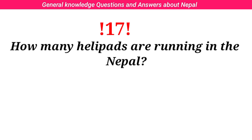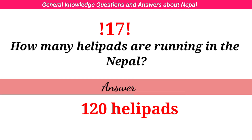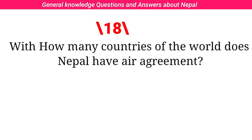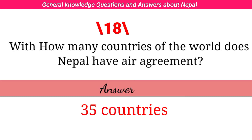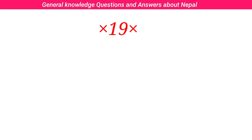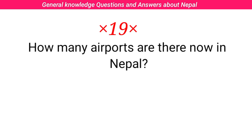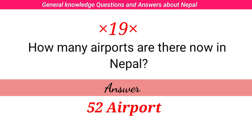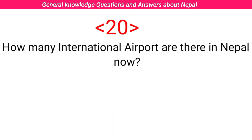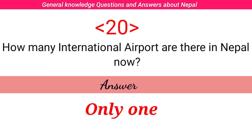How many helipads are running in Nepal? Answer: 120 helipads. With how many countries of the world does Nepal have an air agreement? Answer: 25 countries. How many airports are there now in Nepal? Answer: 52 airports. How many international airports are there in Nepal now? Answer: only one.